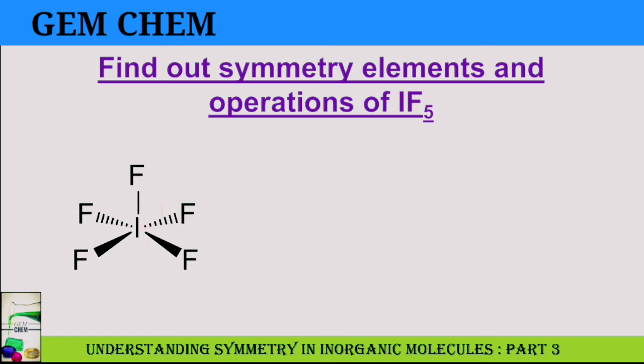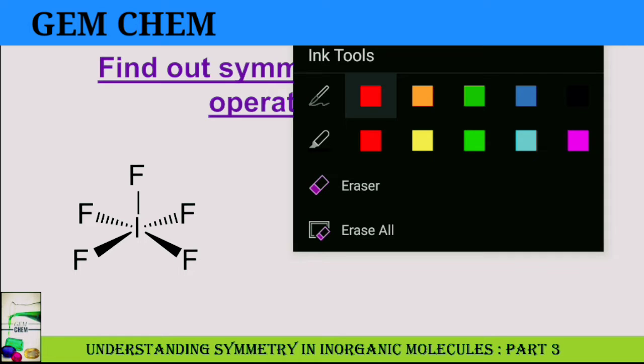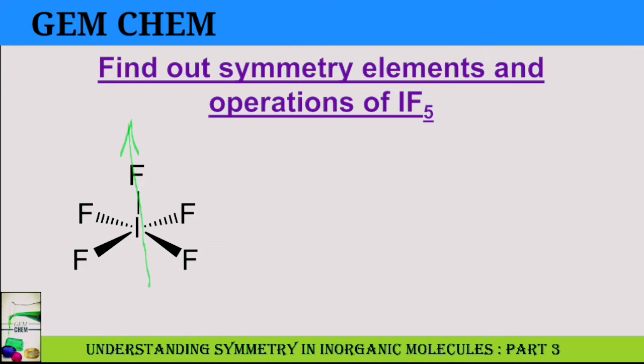Then we will have a C4 axis passing through the top fluorine. Once we rotate for one C4, then the fluorines exchange their places. But since they are the same atom, so no change. Thus we can consider C4 as one of the symmetry elements.